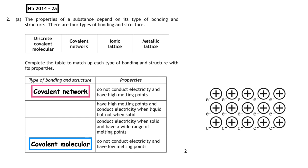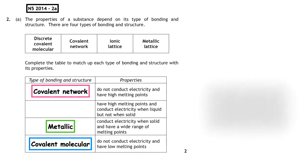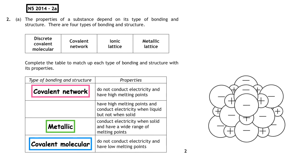When we're looking at metallic substances, we know that they always conduct electricity. All metals conduct electricity. So if we look at the third point, conduct electricity when solid and have a wide range of melting points. This is our metallic bond which leaves us to place the ionic lattice structure with the high melting points and conduct electricity when liquid and not solid. When you go on to the next lesson, we will go on to why this is the case for ionic substances.